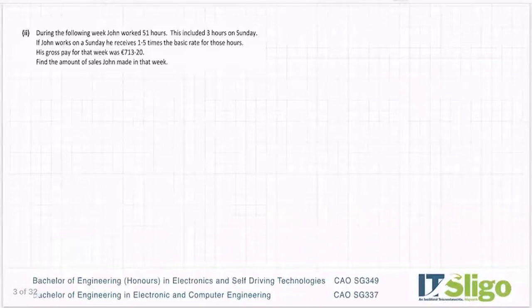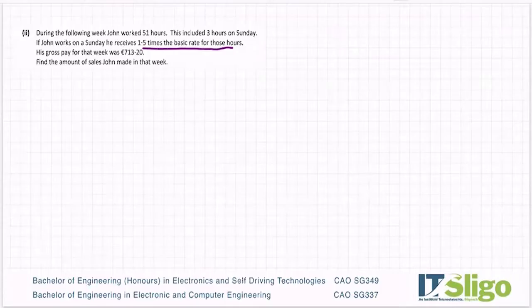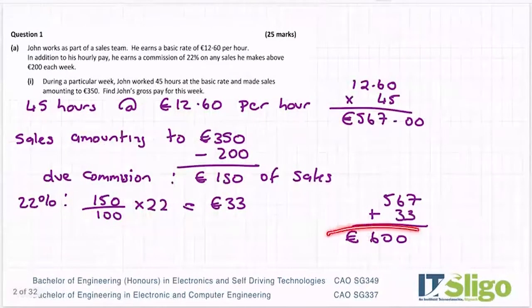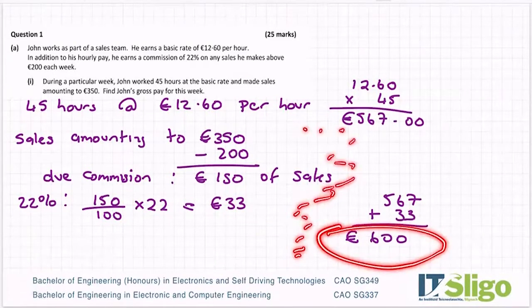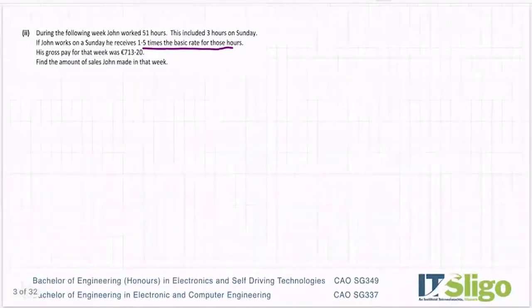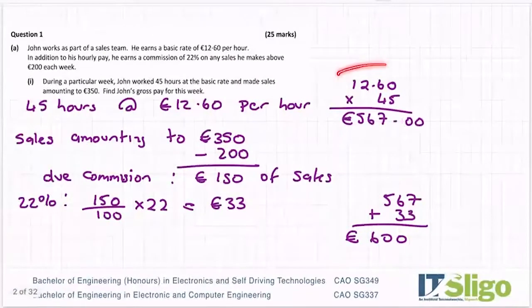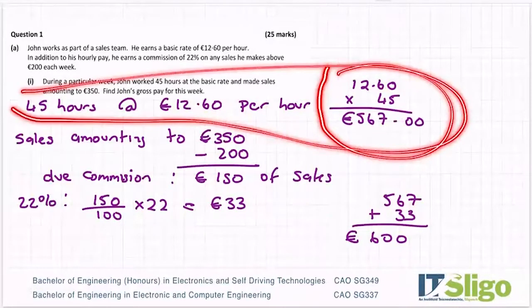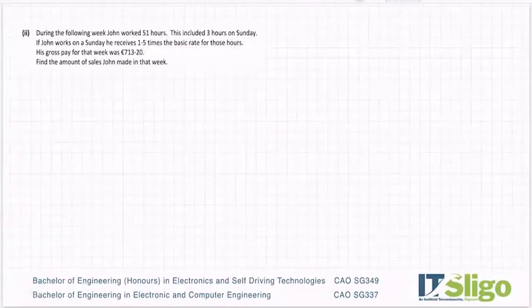Part two. During the following week John worked 51 hours. This included three hours on a Sunday. If John works on a Sunday he receives 1.5 times the basic rate for those hours. His gross pay for that week was €713.20. Find the amount of sales John made in that week. Okay, so what they've done here is they've given us his pay, and we have to trickle our way back through the question to get the amount of sales that he made in the week. It's a backwards question. Well let's work out his wages, because that's kind of standard and then we can figure out then how much extra did he get for commission.